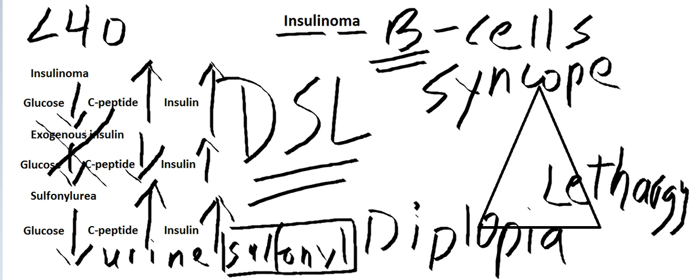And neuroendocrine tumors contain what? They contain somatostatin receptors. So what you're going to do is you're going to give them radiolabeled somatostatin.